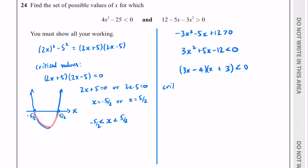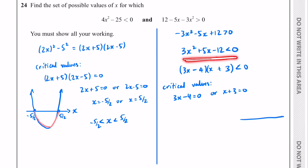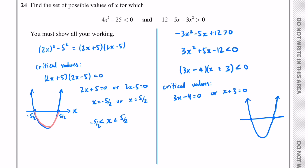This expression is less than 0, so now we find the critical values. We set 3x − 4 = 0, giving x = 4/3, or x + 3 = 0, giving x = −3. Draw a diagram — it's a positive quadratic in this rearranged form. The critical values are x = −3 and x = 4/3, and we're looking for where it's below the x-axis — less than 0 — which is between −3 and 4/3.